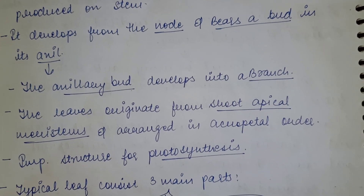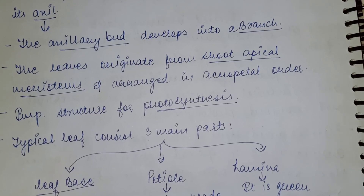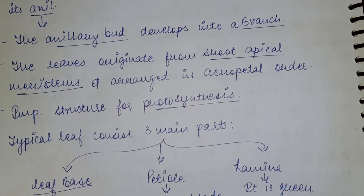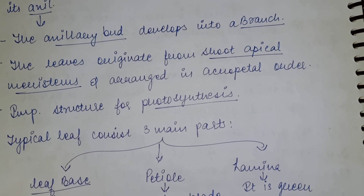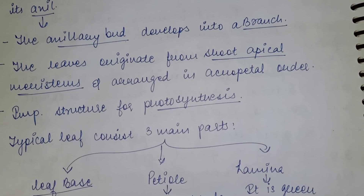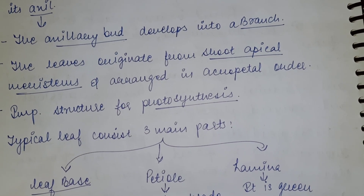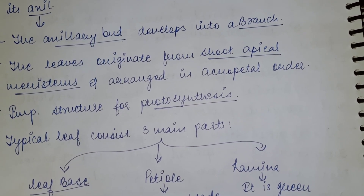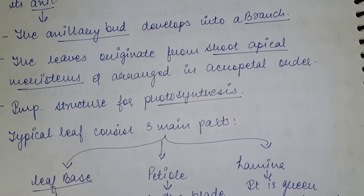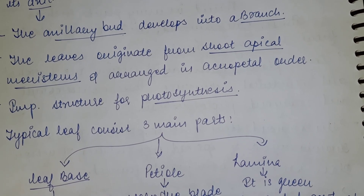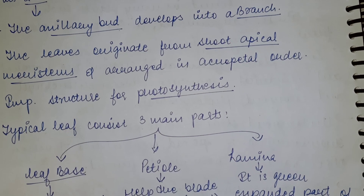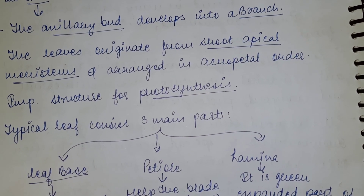The leaves originate from the shoot apical meristems and are arranged in acropetal order. The leaves originate from the shoot system of flowering plants. They form an important structure for photosynthesis — meaning the leaves play an important role in the process of photosynthesis and in food production.